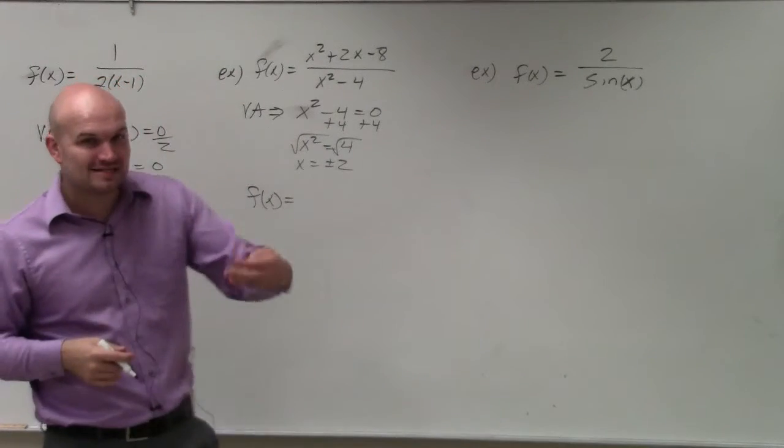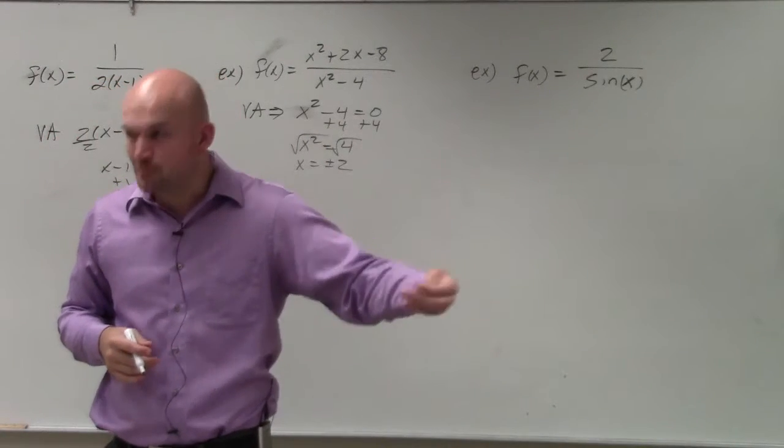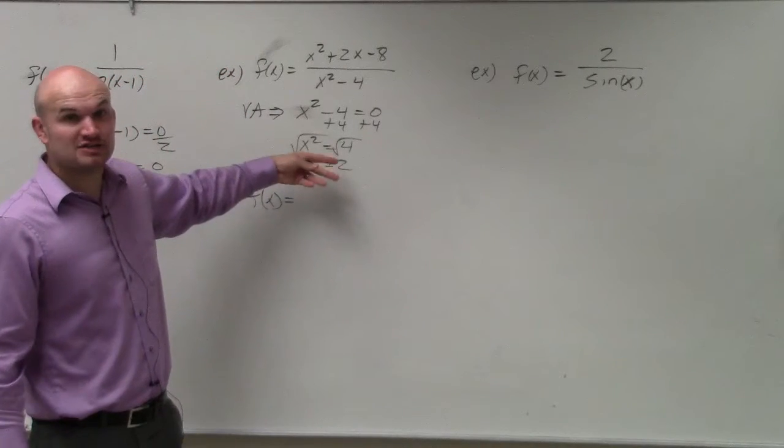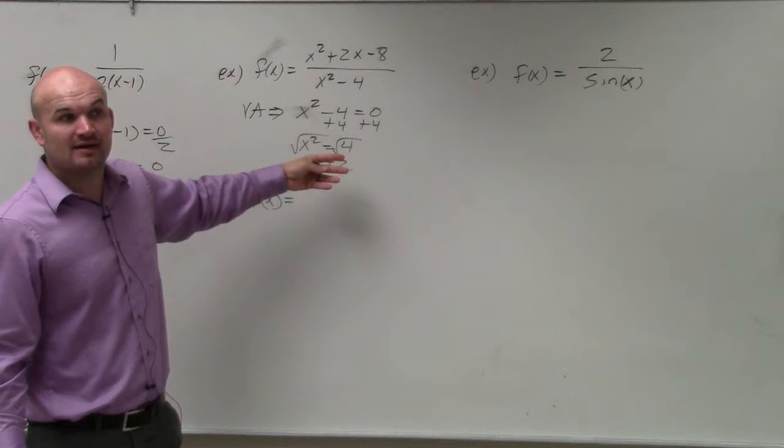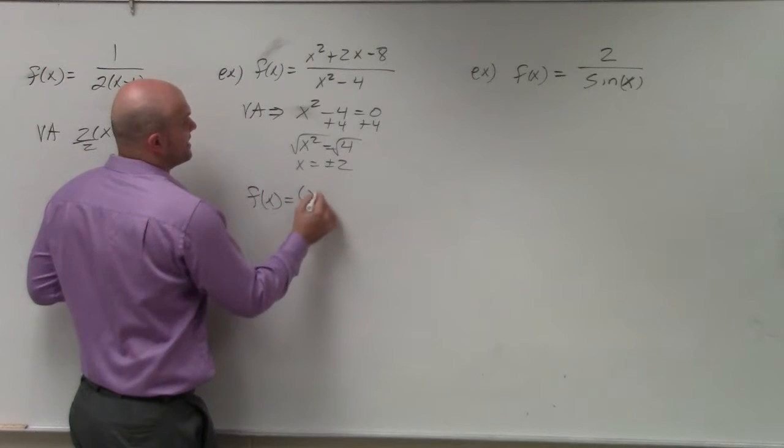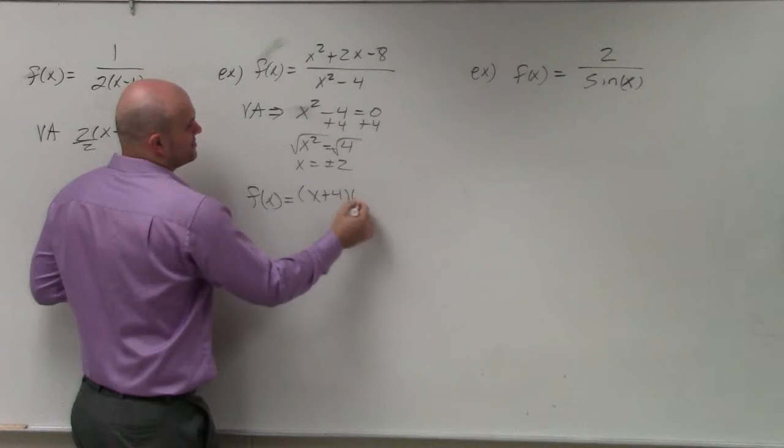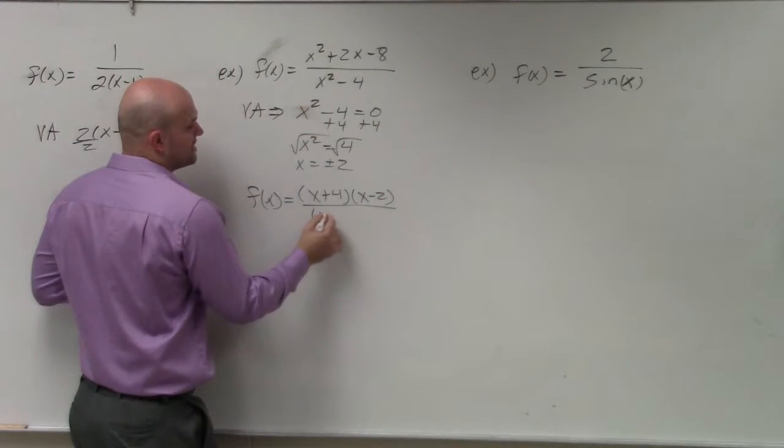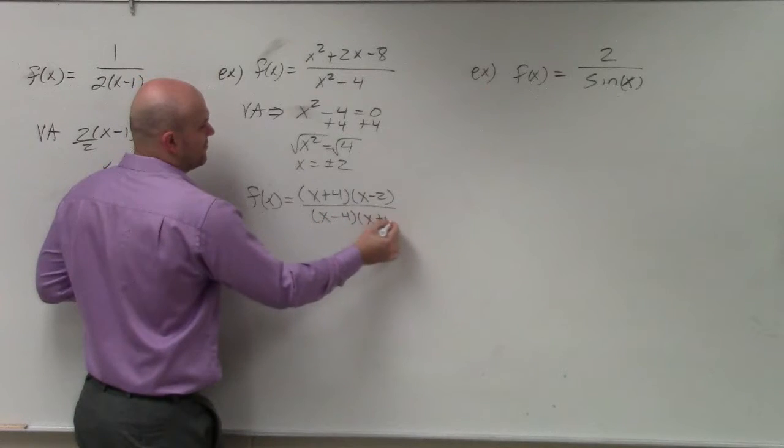Because remember, vertical asymptotes are non-removable discontinuities. So, if we have a removable discontinuity, which could be plus or minus 2, or it could be both, then those are not asymptotes. So, when I factor this out, I get x plus 4 times x minus 2. x squared minus 4 is x minus 4 times x plus 4.